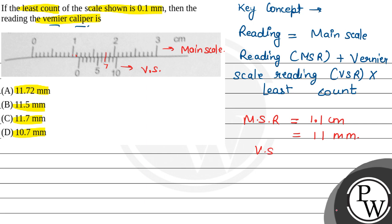Now we have vernier scale reading that is equal to 7 here. So 7, and least count that is given in the question also, that is 0.1 mm.